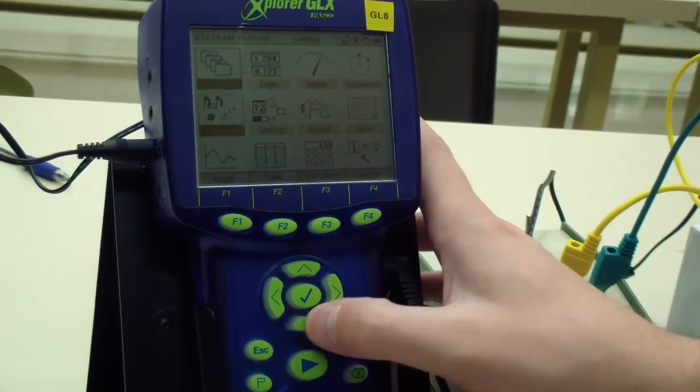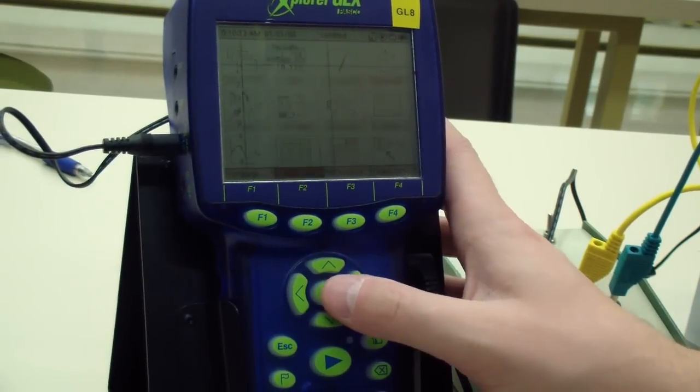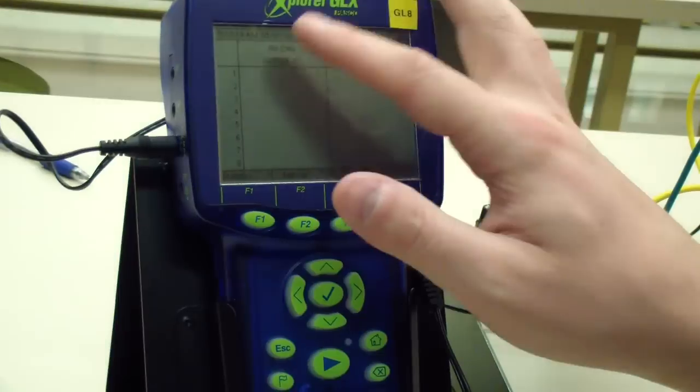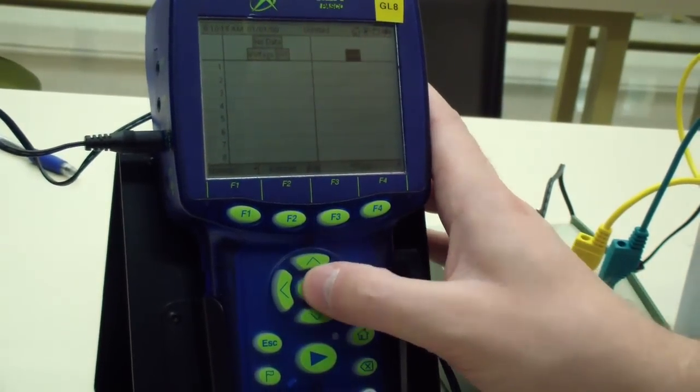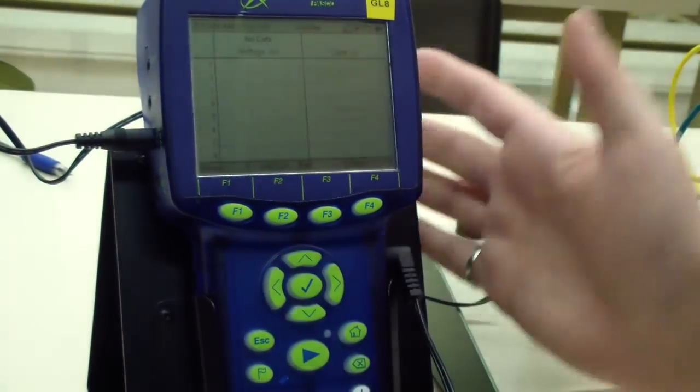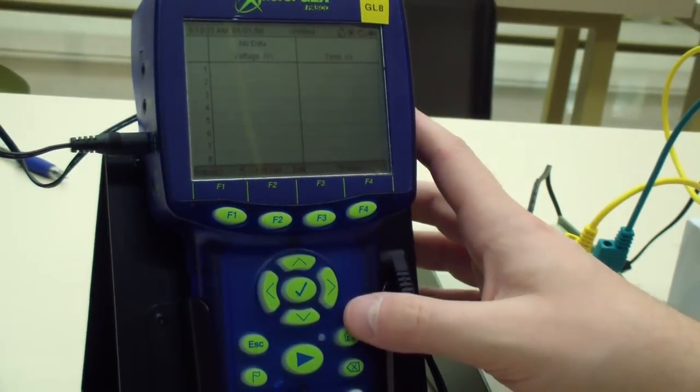Press home and navigate to the table option and press select. If the table that appears does not display voltage and time, press select and scroll over to select the correct options. Then press home and select graph. You are now ready to start collecting data.